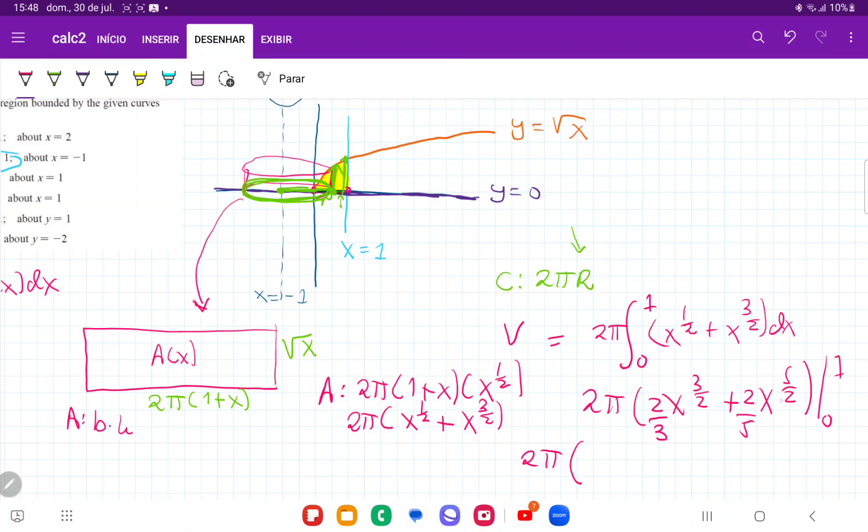So that's 2π times... If we plug in 1 for x, that gives us 2/3 plus 2/5. So I'm going to put this in my calculator. And my volume is going to be 32π over 15.